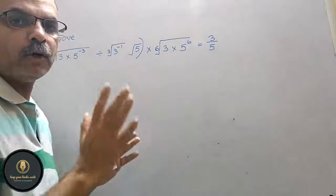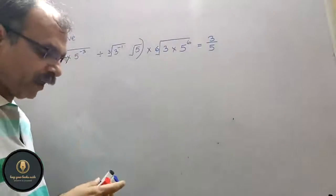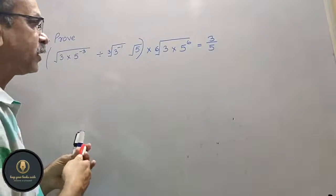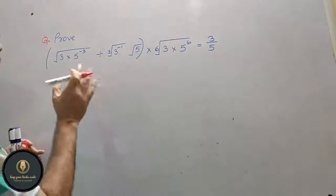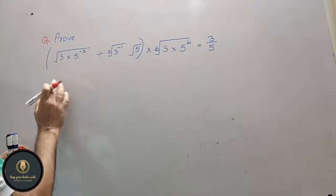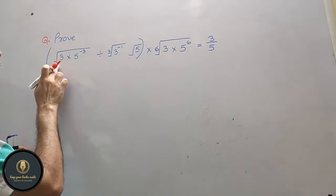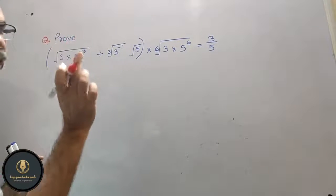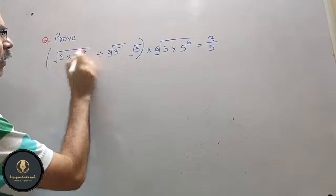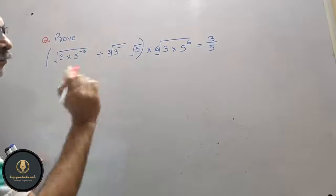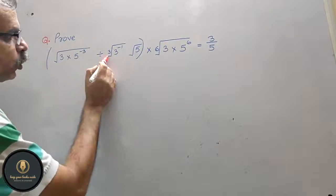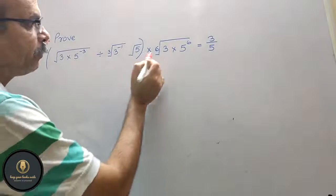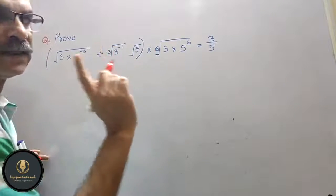We have to prove that. Isko hum prove karenge kaise — thoda sa dhyan se dekho isko. Sabse pehle hum kya karenge: jo aapka root laga hua hai, uski jagah pe hum yahan power dalenge half. Aur yahan cube root hai to 1 by 3, aur yahan 6th root hai to 1 by 6.